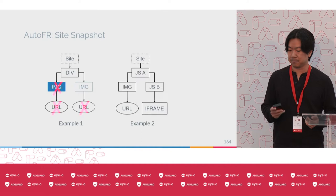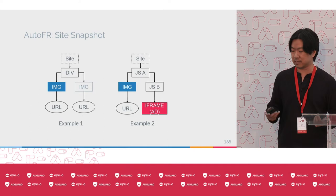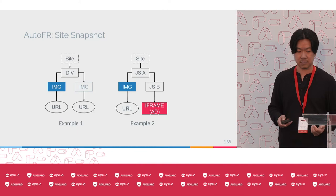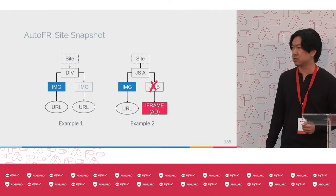For a site with an iframe, we use the ad highlighter to annotate it and determine it's an ad, and use custom JavaScript to annotate the image as visible. When we apply a rule — if it blocks JavaScript B, we know that's good because it blocks the ad. But if the rule blocks JavaScript A, we know it will have mixed effects, blocking both legitimate content and ads.